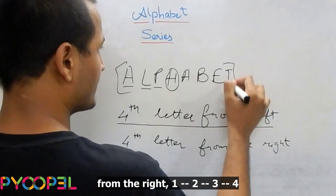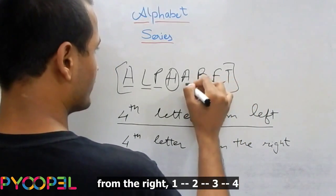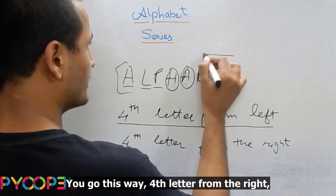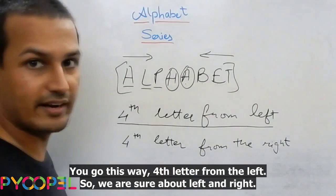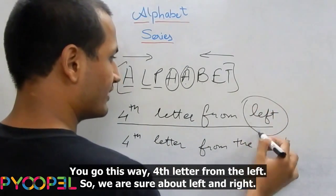Fourth letter from the right, one, two, three, four. You go this way, fourth letter from the right, you go this way, fourth letter from left. So, now we are sure about left and right.